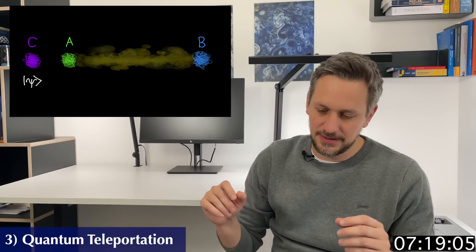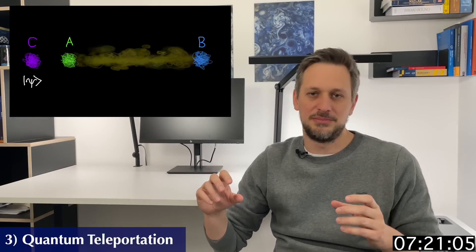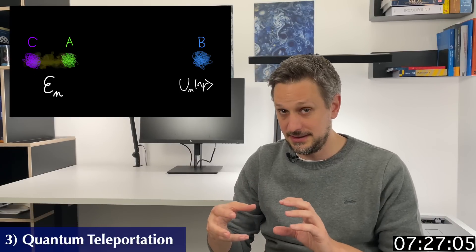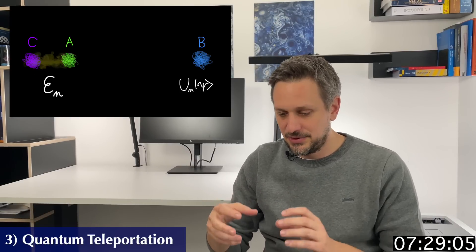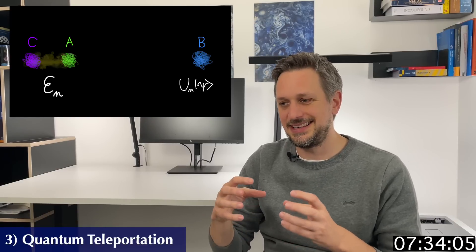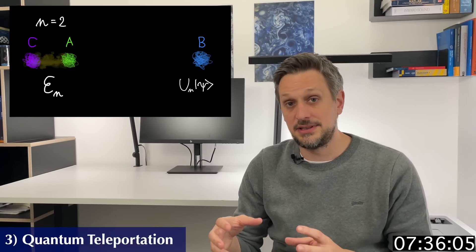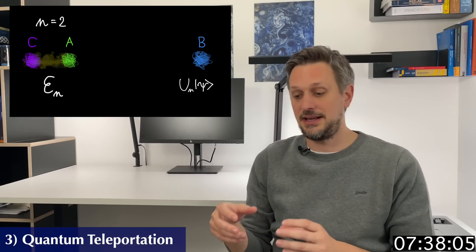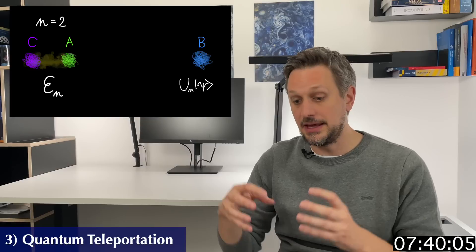And also another particle, C, which carries the state that you want to teleport. So the first step, and this is the step where all the magic is, is performing a so-called bell measurement. In essence, it means you entangle the pair you hold, so A and C, and then perform a measurement, but not of the state of the particles themselves, but of the state of the entanglement. So the end result of this is that the particles held by the sender A and C are now entangled, while the particle at the receiver B now has a modified version of the desired state.